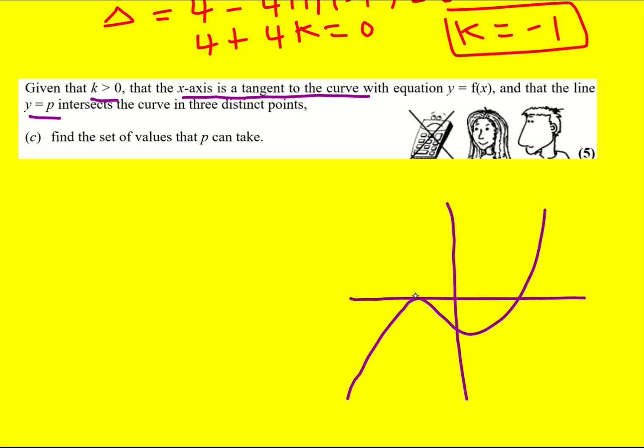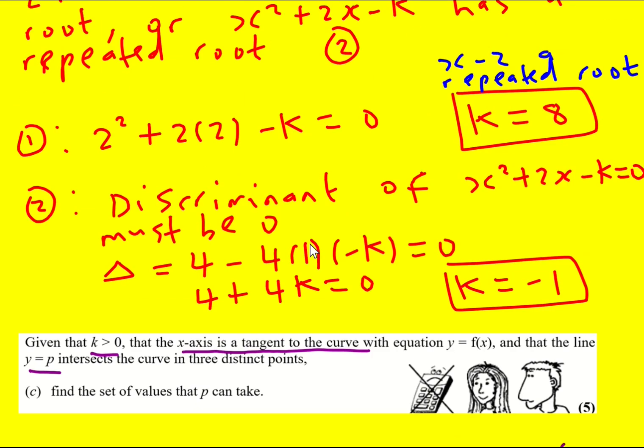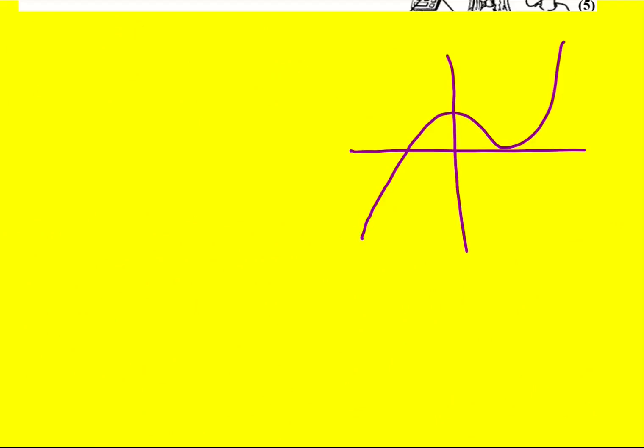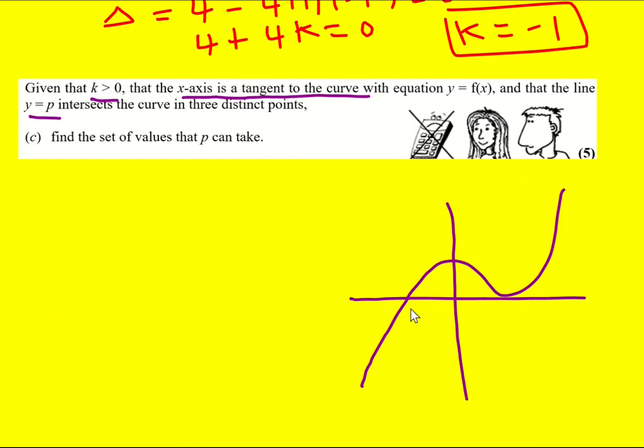And the only possibility is if we have something like this. So that would be a tangent because you have a zero gradient. Now could it be either of those? Well, actually no, because the function, if you remember, had a +2k in there and we're told that k is positive, so it's got to be this one rather than the other one. This is 2k. What this actually means is that there's a repeated root here and then a repeated root.